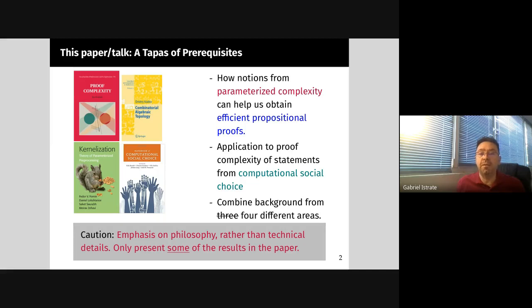These are proof complexity, parameterized complexity specifically kernelization, computational social choice, and last but not least, combinatorial algebraic topology.